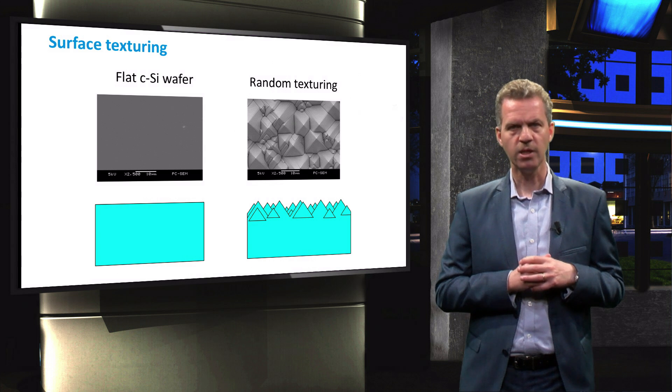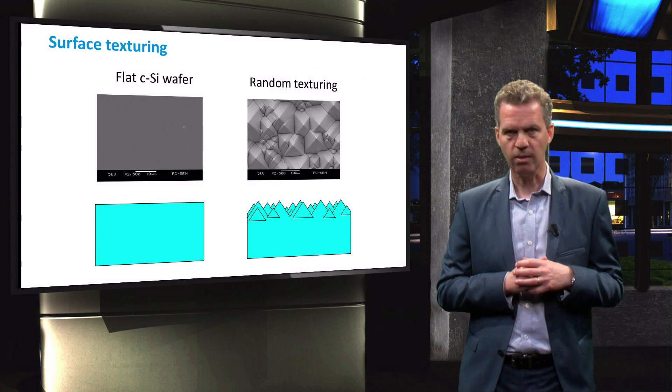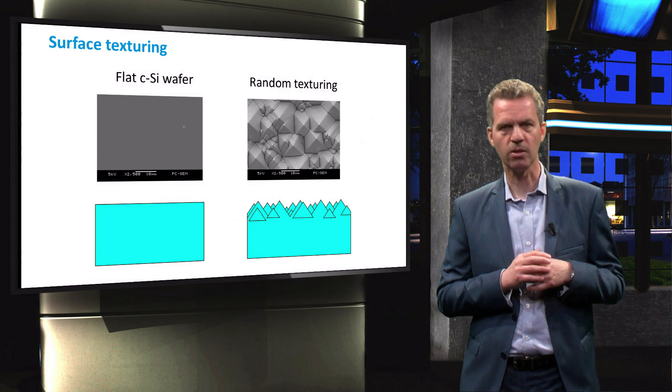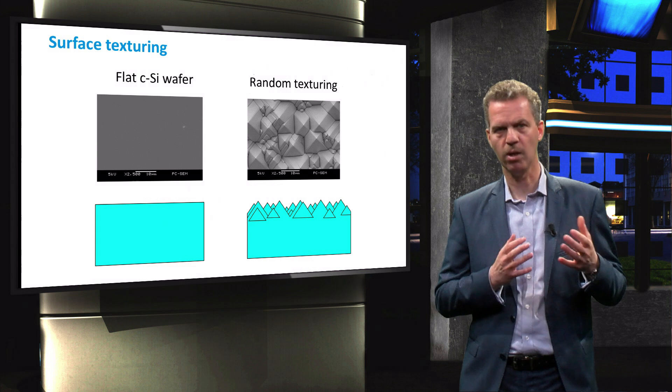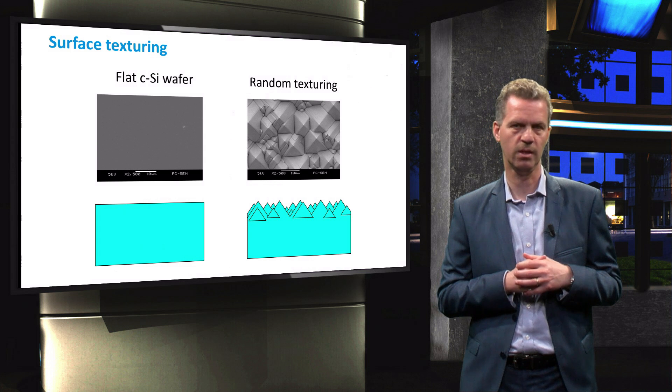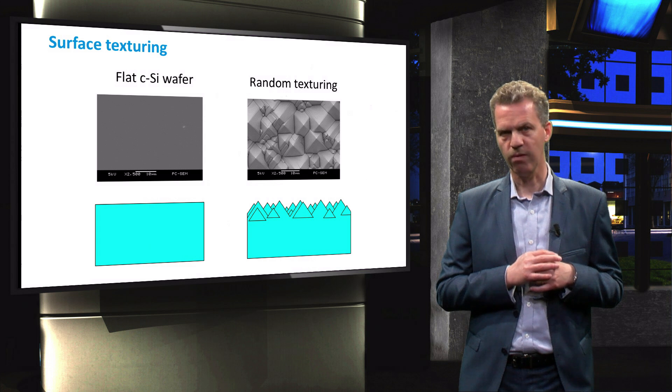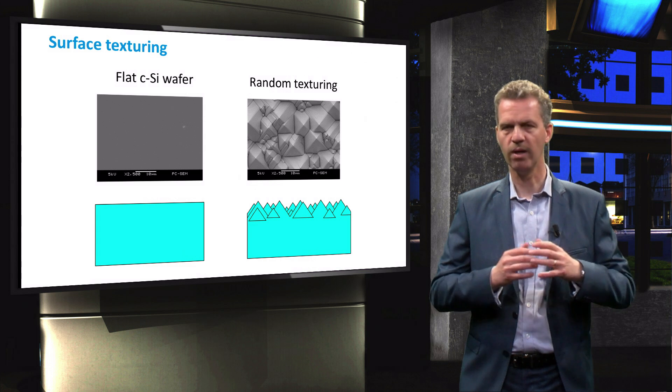However, if the feature size of the pyramid is smaller than the wavelength of the incident light, it will serve as a gradual increase of the refractive index and hereby reduce reflection, as I explained in the previous video. Random texturing hereby reduces reflection over a wide range of wavelengths.